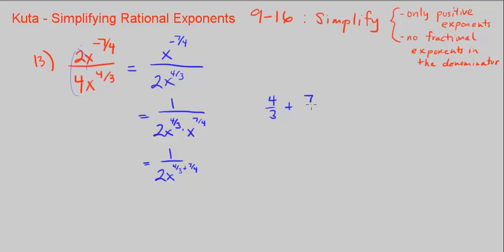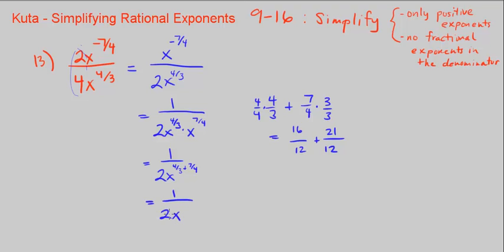16 plus 21 is 37, so we have 1 over 2x to the 37 over 12 power. This has only positive exponents and no fractional exponents in the denominator — well, we do have a fractional exponent in the denominator, and the problem is really simplified at this point.